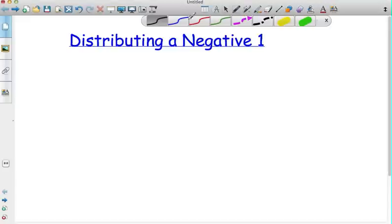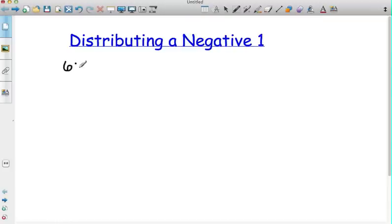Hello! Today we are going to look at how to distribute a negative 1. Grab those MathJournals open and the example I want you to copy down is 6x minus 3 minus in parentheses negative 4x plus 2 equals 7x minus 4 plus x.